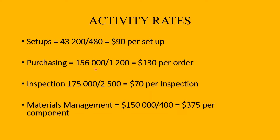For purchasing, we take the total purchasing overhead and divide it by the activity base total to get $130 per order. For inspection, we do the same thing and get $70 per inspection. For materials management, we get $150 divided by 400 equals $3.75 per component. So: materials management $3.75 per component, inspection $70 per inspection, purchasing $130 per order, and setup $90 per setup.